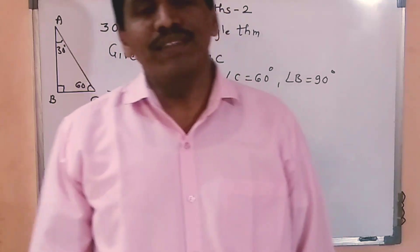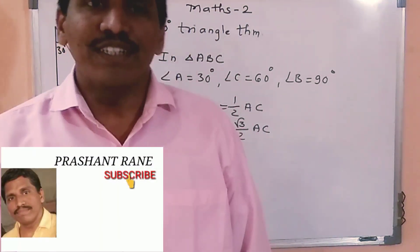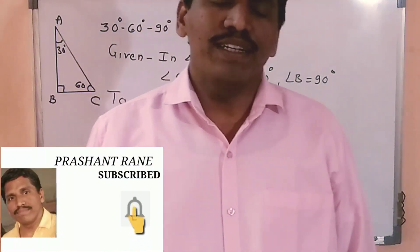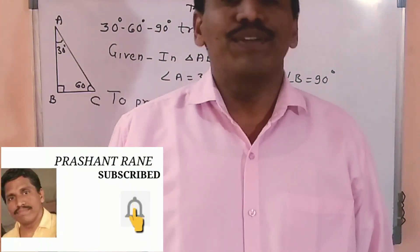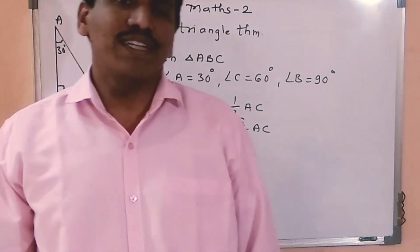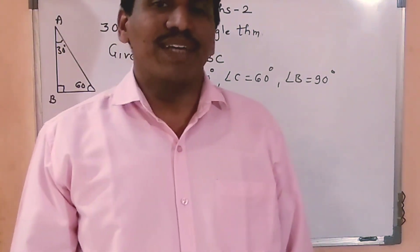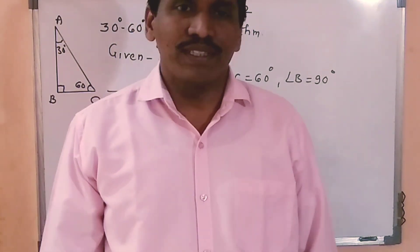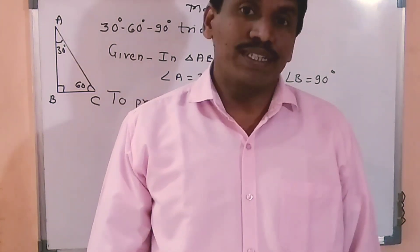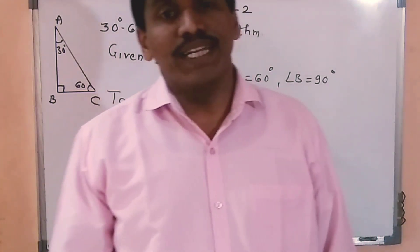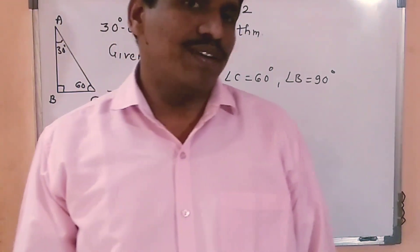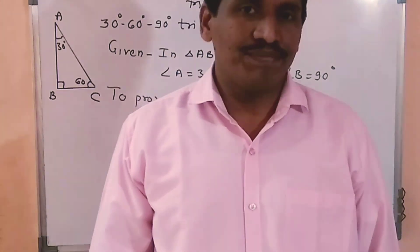Today we will learn the 30-60-90 degree triangle theorem, the 45-45-90 degree triangle theorem, application of Pythagoras theorem, and Apollonius theorem. In 9th standard, we have studied the 30-60-90 degree as well as the 45-45-90 degree triangle theorem.